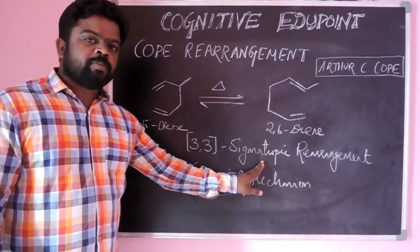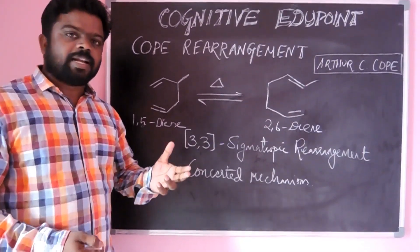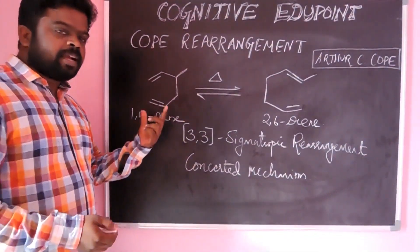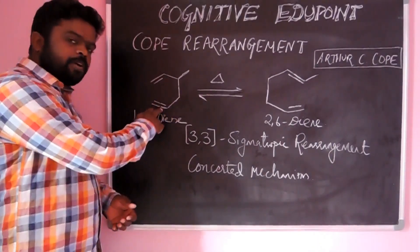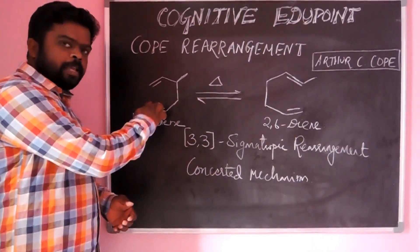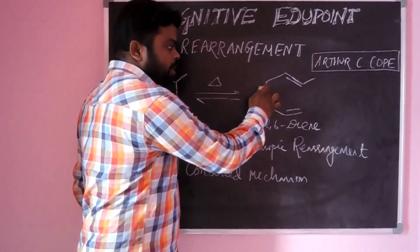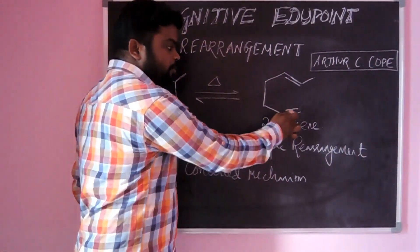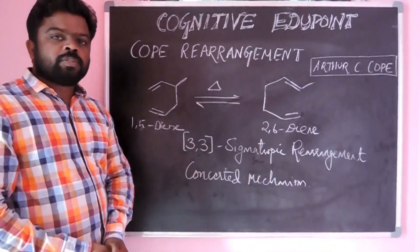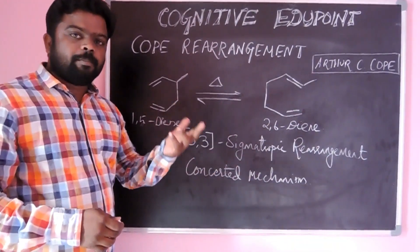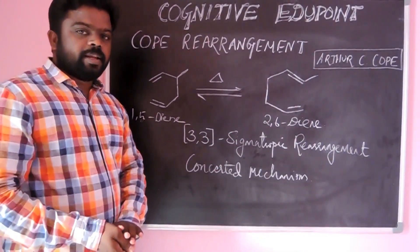Sigmatropic rearrangement means there is no change in the number of sigma bonds and number of pi bonds. We can see on the reactant side: 1, 2, 3, 4, 5 — five sigma bonds and 2 pi bonds. While on the product side also, 1, 2, 3, 4, 5 sigma bonds and 2 pi bonds. So there is no change in the number of sigma and pi bonds. So we call this a sigmatropic rearrangement.